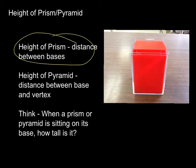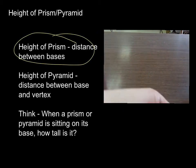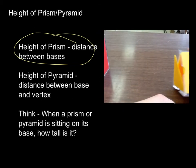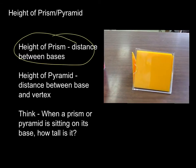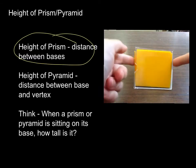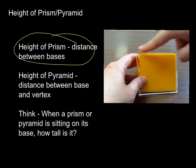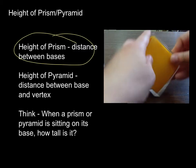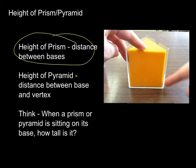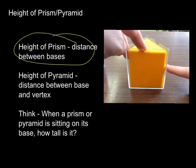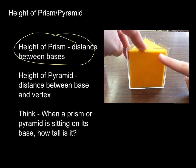It works the same with this triangular prism right here. So if these are the bases, then the height is going to be right here — the distance between the two bases. In other words, when it's sitting on its base, how tall is it?